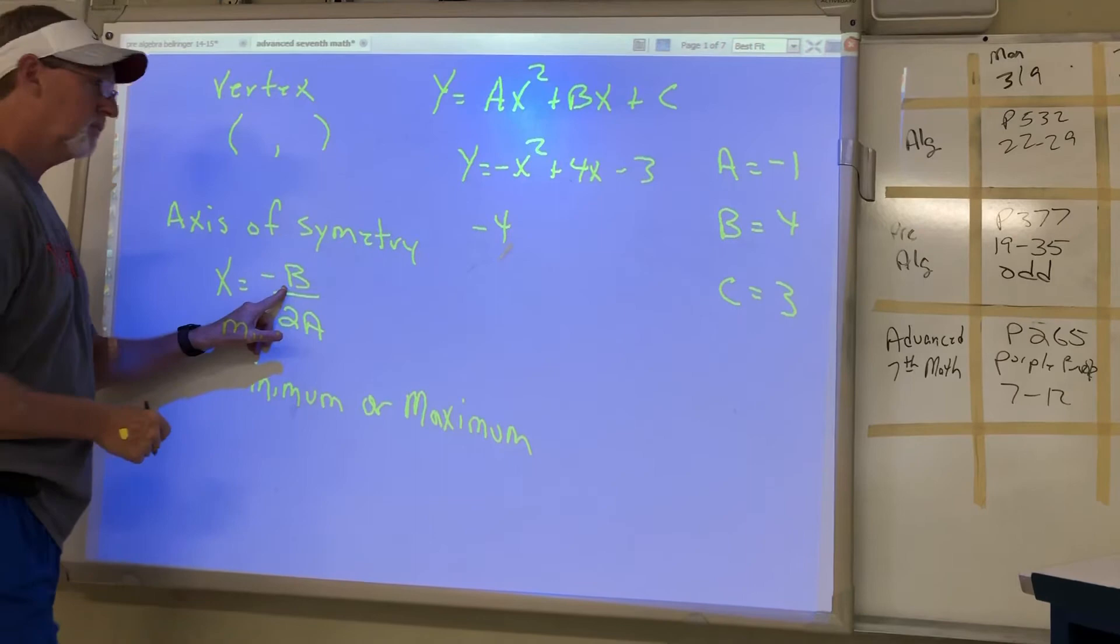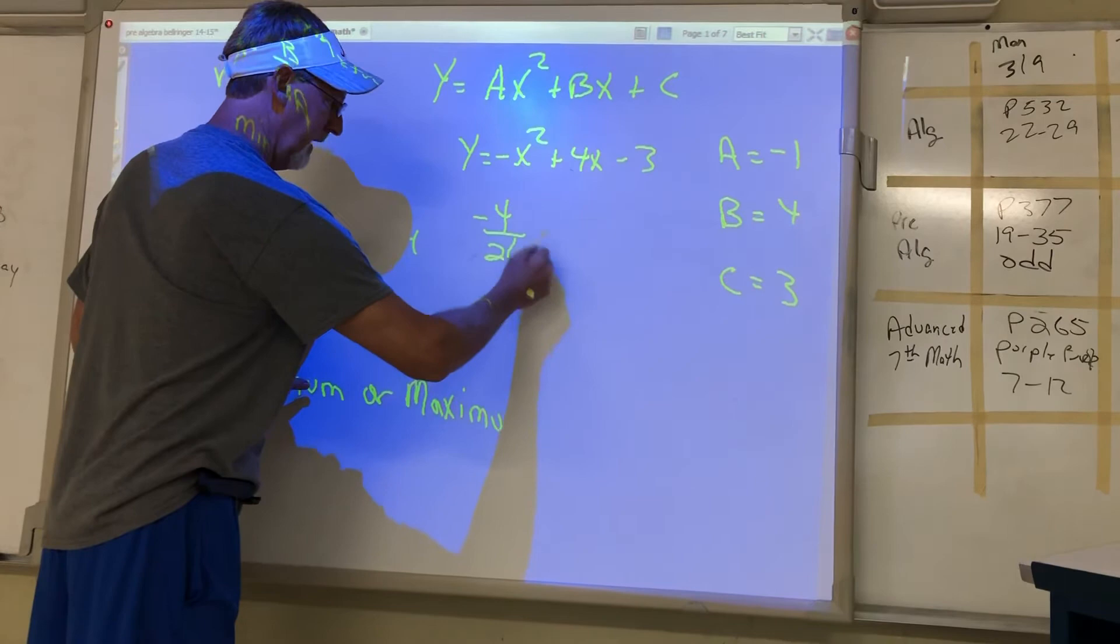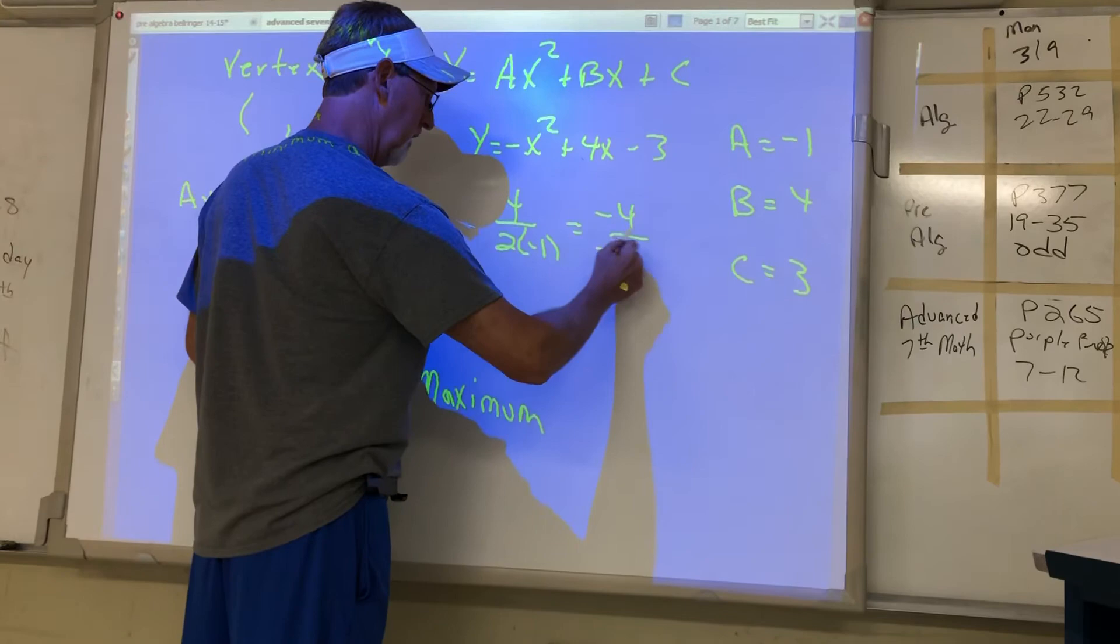The A is negative 1. So when we work that out, we got negative 4 over negative 2, which is positive 2. So the x value in the vertex is positive 2. We then have to plug that in like we did the other day in place of x.